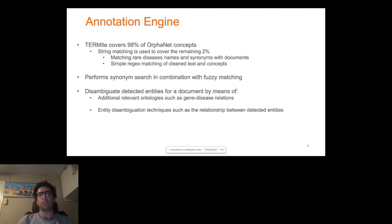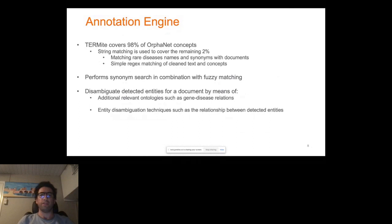The string matching performs a synonym search in combination with fuzzy matching, trying to match names and synonyms of diseases in documents using a fuzzy matching approach. It also tries to disambiguate detected entities if there is any ambiguity — for example, if a detected candidate matches multiple entities, it disambiguates by looking at other entities detected in the document or by looking at gene-disease relations mentioned in the document.